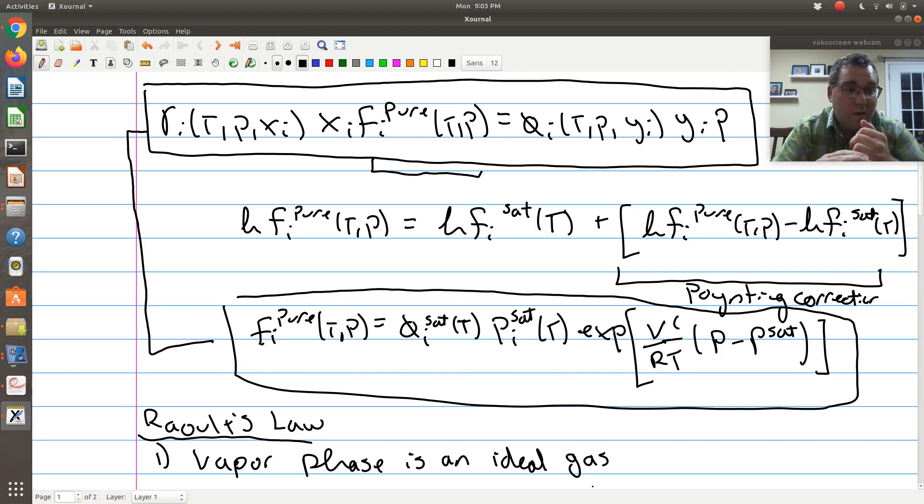The common exception to the rule is if I'm dealing with a component that's known to associate in the vapor phase. When I think about associating fluids, the most common example is components that contain carboxylic acid. If I'm trying to model acetic acid, acetic acid is known to dimerize or self-associate in the vapor phase. But in general, if I have a fluid or system near ambient pressure, it's probably pretty reasonable to assume it's an ideal gas.